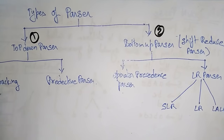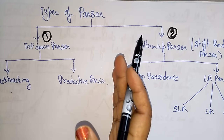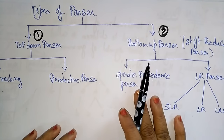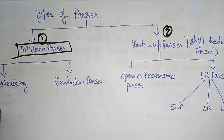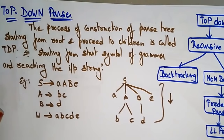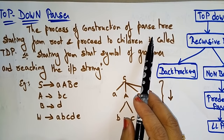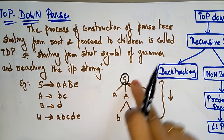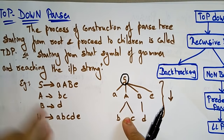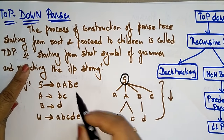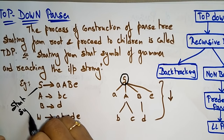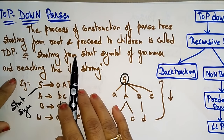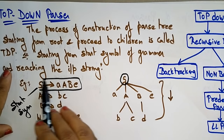Let's discuss the top-down parser first, and what role the different types of top-down parsers play in syntax analysis. A top-down parser is defined as the process of construction of a parse tree starting from the root and proceeding to children. That means starting from the start symbol — S is the start symbol, which could be any non-terminal like E, T, or S — starting from the start symbol of a grammar.